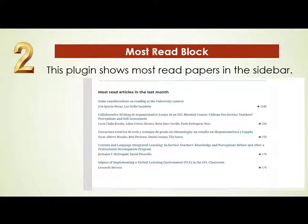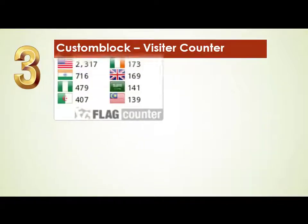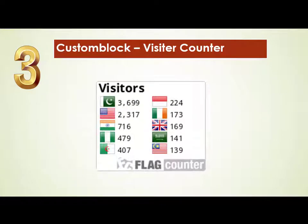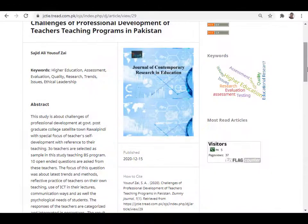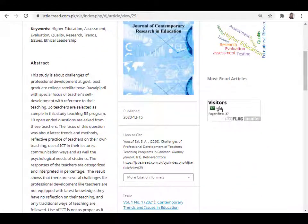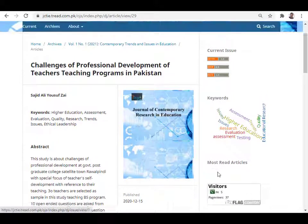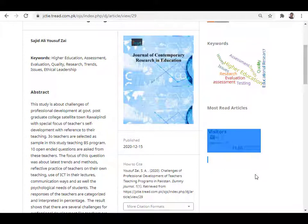The third plugin is the Custom Block Visitor Counter. This visitor counter shows the journal editor how many visitors have visited the page and which country they are from. This is very useful statistics to show the journal editor which countries are viewing their OJS journal. For example, after installing the visitor counter, it shows visitors from Pakistan as 5 and page views as 37.